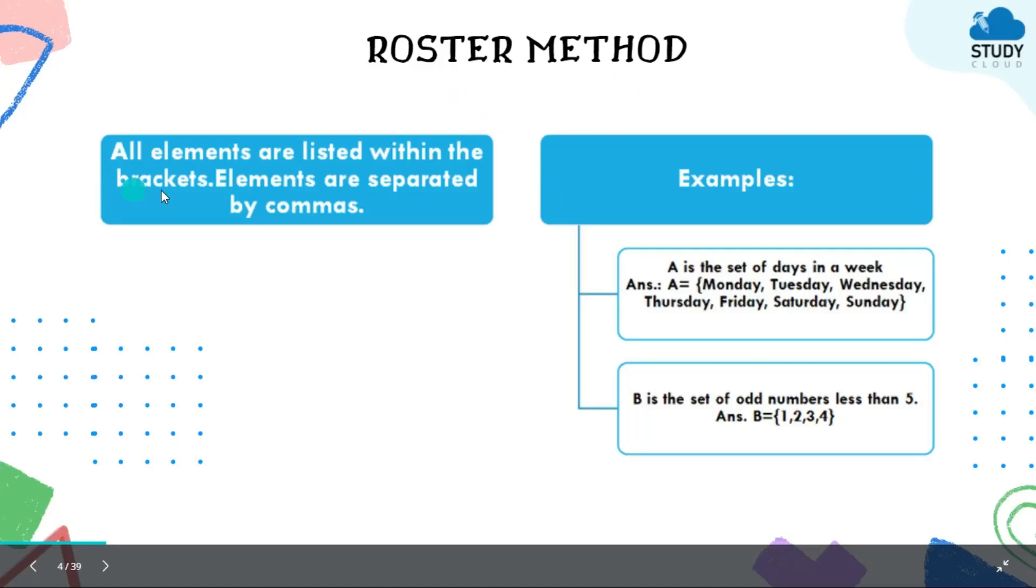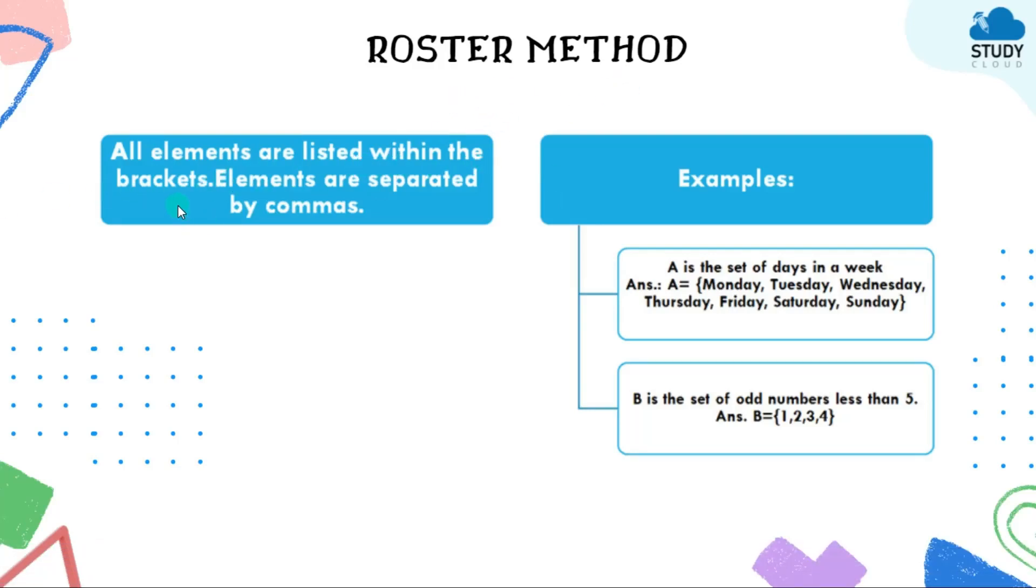Roster method: all elements are listed within the brackets, elements are separated by commas. In this method, all elements are listed or tabulated and the elements will be separated with the help of commas and are enclosed within two brackets, mainly two curly brackets on two extreme ends.